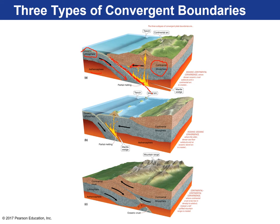Here's the model of a subduction zone. Ocean lithosphere and continental lithosphere collide, and the ocean lithosphere sinks underneath the continental lithosphere because ocean lithosphere is denser — heavier per unit volume. So when they collide, it sinks into the mantle and continues to sink because it's denser than the asthenosphere. You can also have ocean lithosphere colliding with ocean lithosphere, in which case the denser — older, colder — slab is the one that subducts.